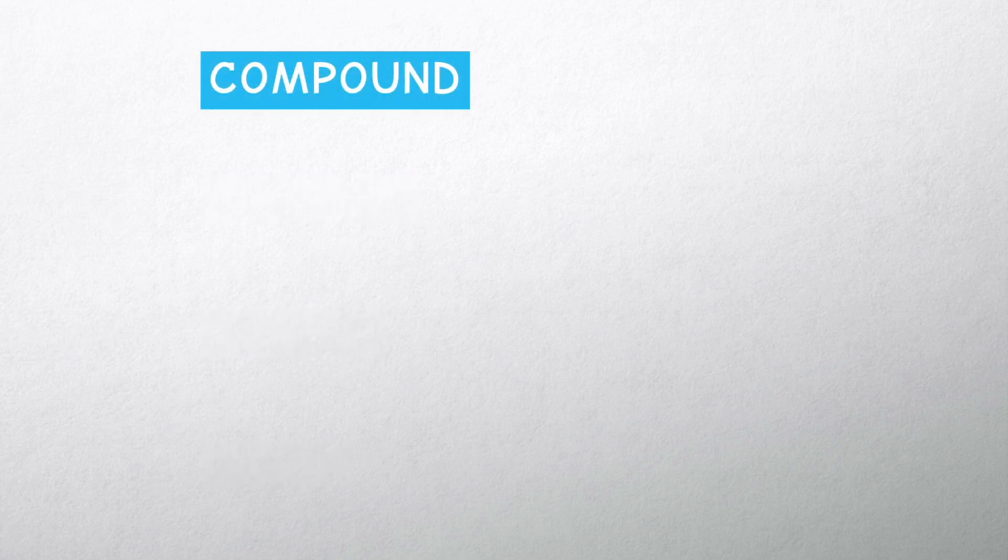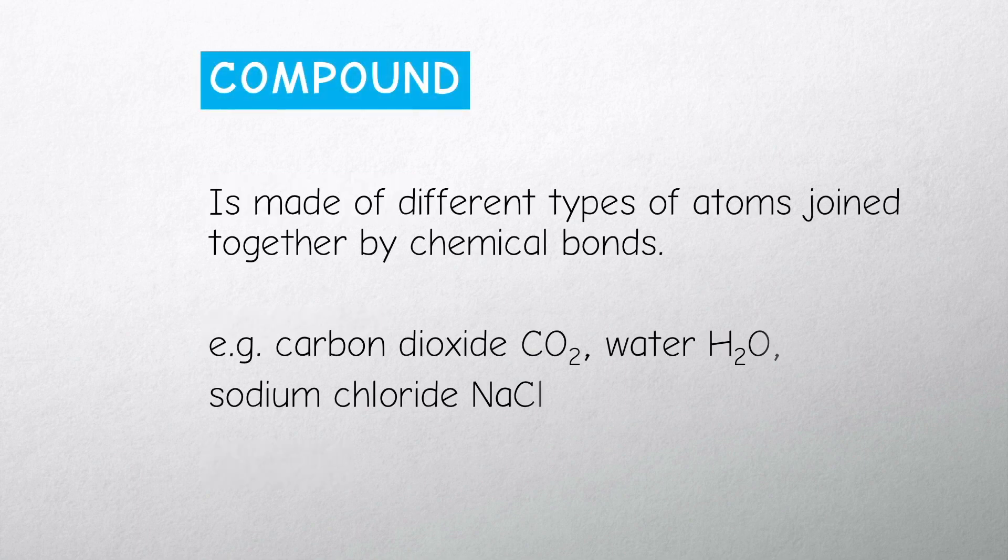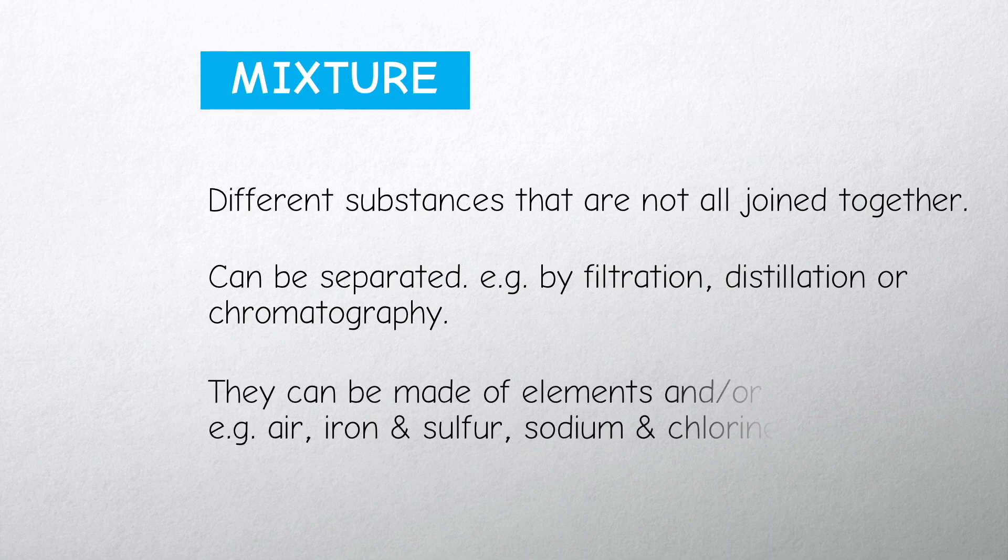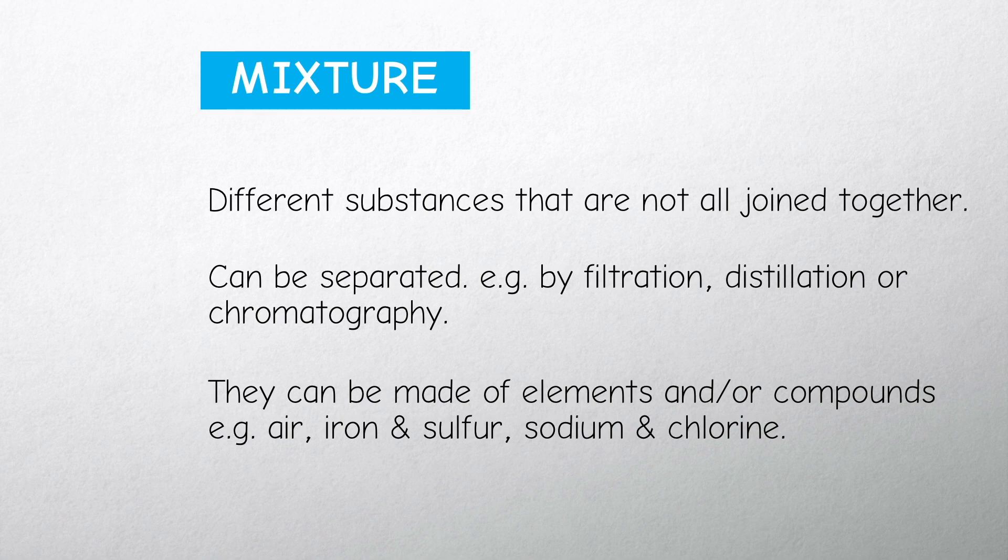A compound is made up of different atoms that are joined together by chemical bonds. A mixture is made up of different substances that are not all joined together. They can be separated by filtration, distillation, or chromatography.